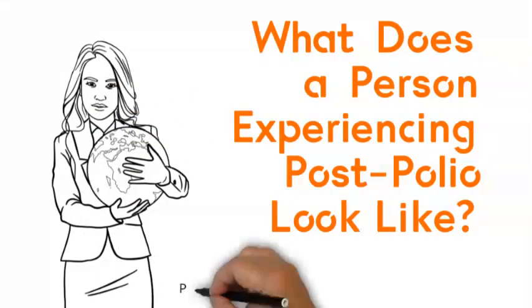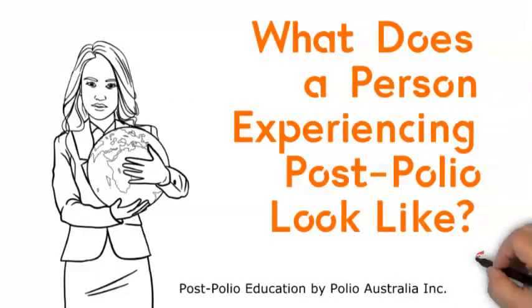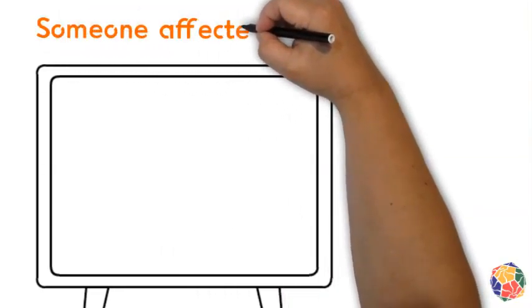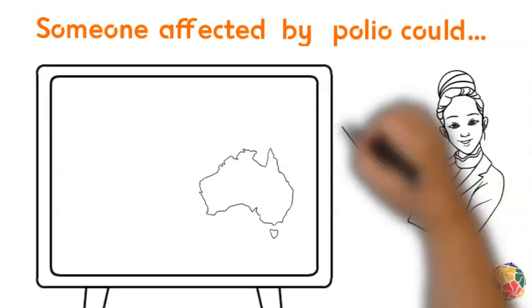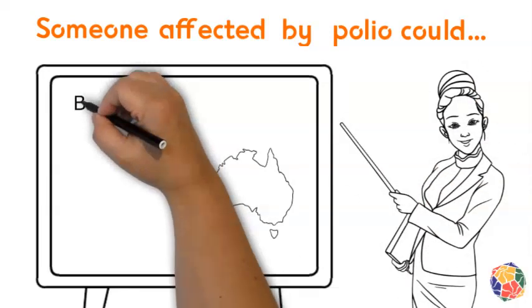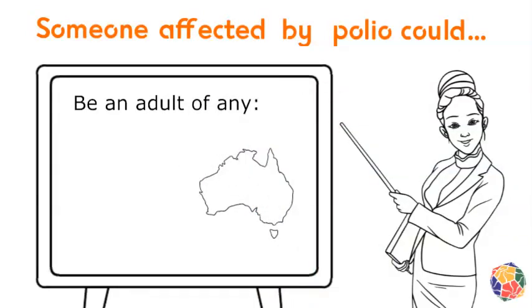What does a person experiencing post-polio conditions look like? That's an interesting question with a surprising answer. Looking at someone or at how they move does not tell us much about someone's polio exposure. In Australia, this person is likely to be an adult, but they could be an adult of any age, of any ethnicity, and of any gender.